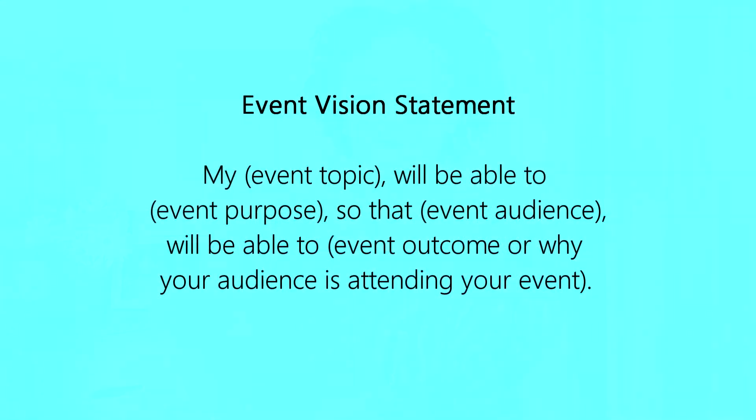Now that you're clear on your why and the why for your attendees, one thing you can do is create a vision statement for your event. Your vision statement is something you can come back to while planning to remind yourself of the purpose and overall goal, and it puts all the information we just developed into one clear statement. Here's a template: 'My [event topic] will be able to [event purpose] so that [event audience] will be able to [event outcome or why your audience is attending].'